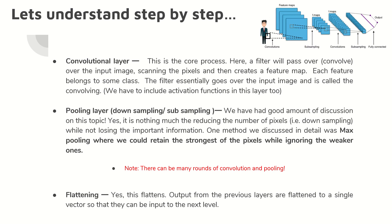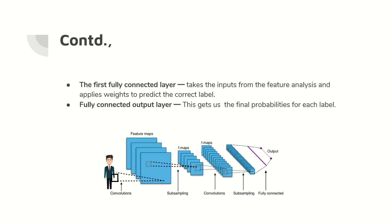If you see the image presented at the top, you will understand. I convolute the input image, I get the feature maps, I subsample it, then I go for a further round of convolution, and I again downsample it. The next step is the first fully connected layer — a very important layer. It takes the input from all the feature analysis done in the previous layers: convolution, downsampling, convolution, downsampling. The features from all these previous layers are taken and weight is applied.